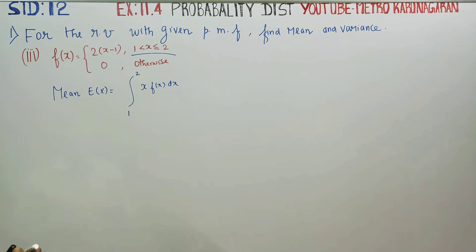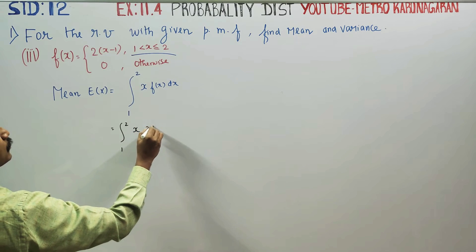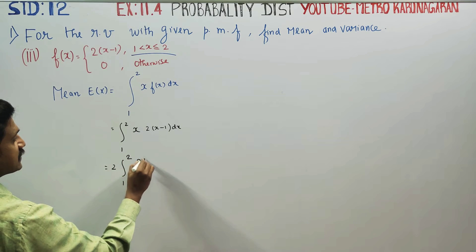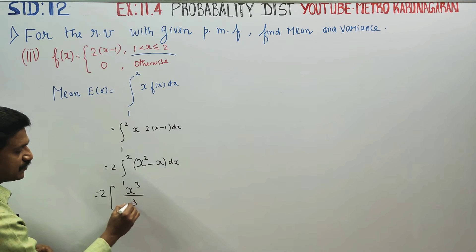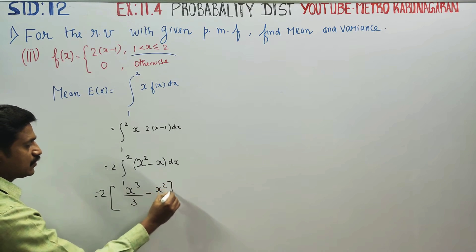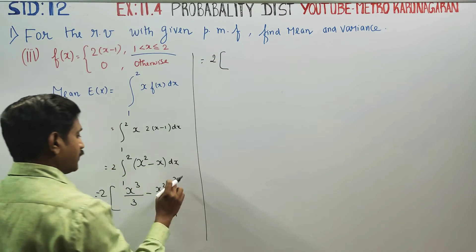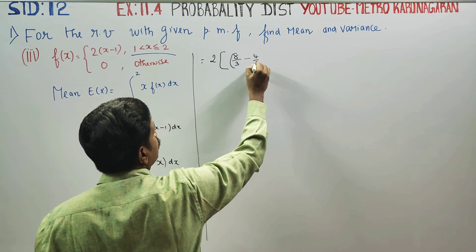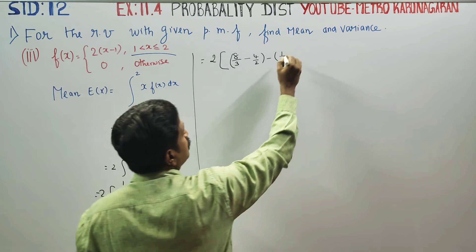For expectation or mean, we take integration 1 to 2 of x times f of x, which is 2 into x minus 1 dx. Taking 2 outside, we get 2 times integration 1 to 2 of x square minus x dx. Now start your integration: x square becomes x cubed by 3 minus x becomes x squared by 2, evaluated from 1 to 2. Upper limit minus lower limit.